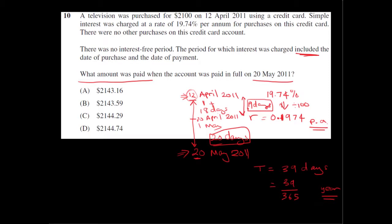So the formula for simple interest is I equals principle times the rate times the time. Now we've got the rate, we've got the time, and the principle we're told is $2,100. So it's just a matter of multiplying these numbers. $2,100 times the rate, 0.1974, multiplied by 39 over 365.